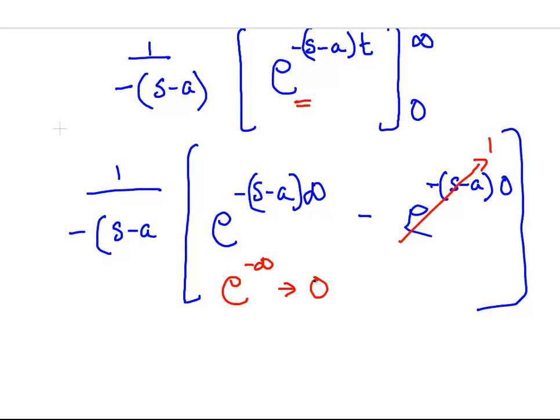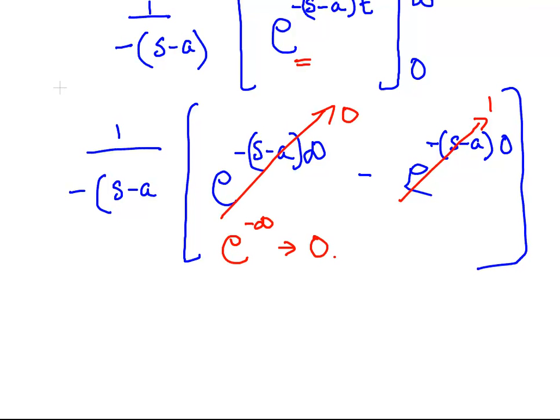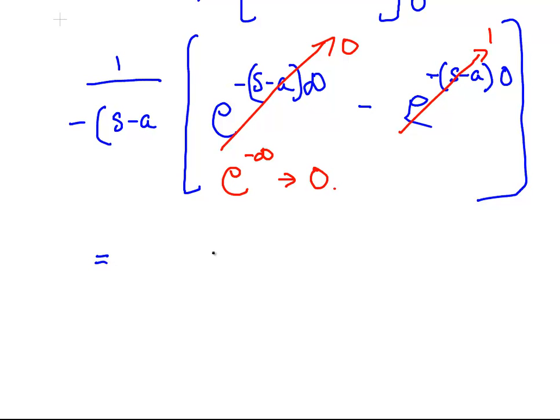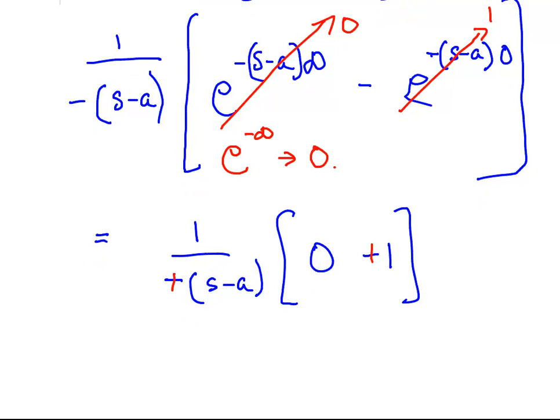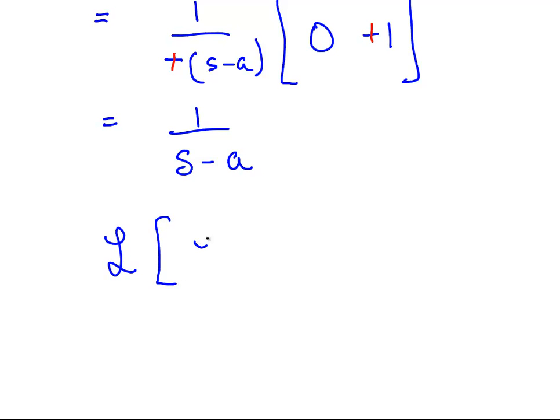So that essentially reduces down to 0. We have 1/(-(s-a)) times (0 - 1). The minuses cancel out. So we have 1/(s-a). The Laplace transform of e^(at) equals 1/(s-a).